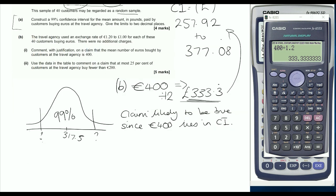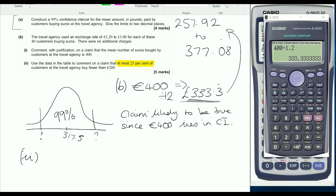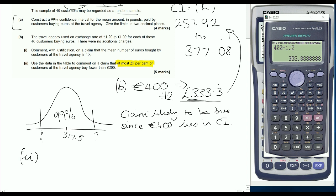Part two was done rather better. However, some students did make a mistake reading the question. Use the data in the table to comment on the claim that at most 25% of customers. What a lot of students did was commented on the claim that 25% of the customers bought fewer than 200 euros.